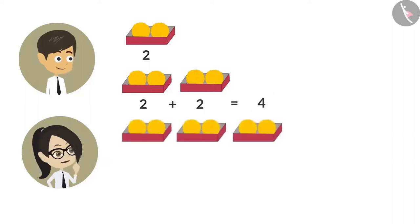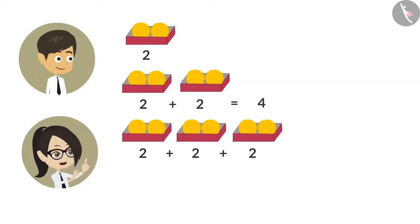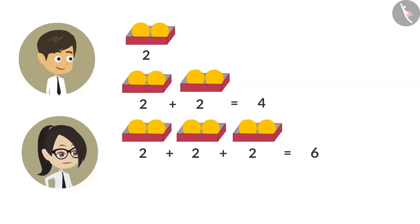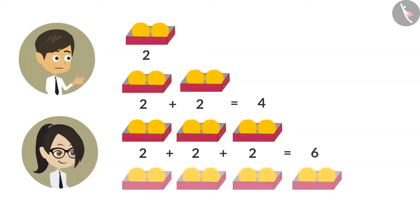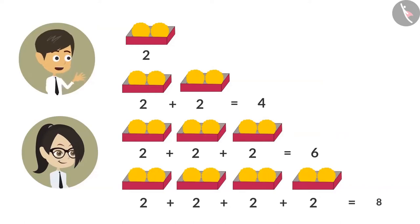To know how many ladoos are there in three boxes, we have to add two three times. After adding two three times, the answer we get is six. To know the number of ladoos in four boxes, we have to add two four times. After adding two four times, the answer is eight.